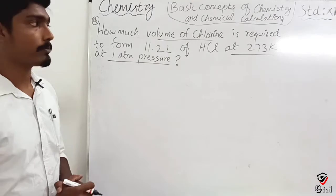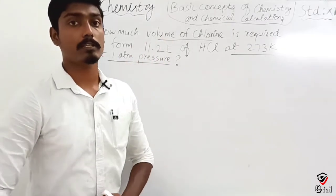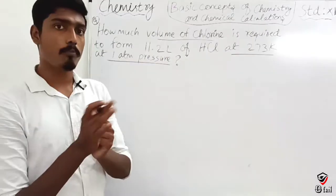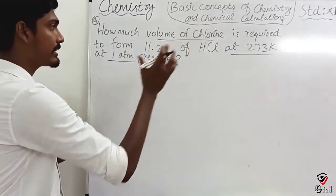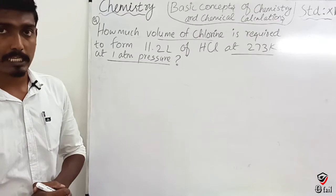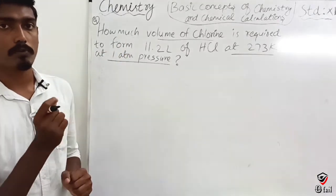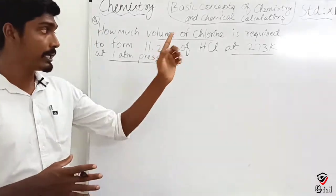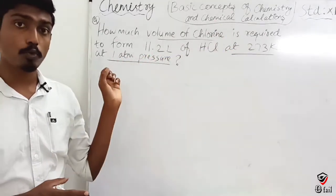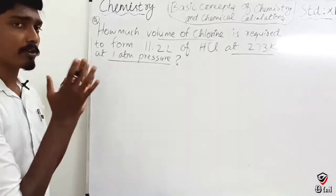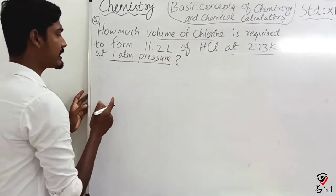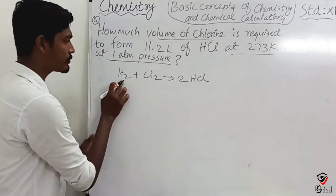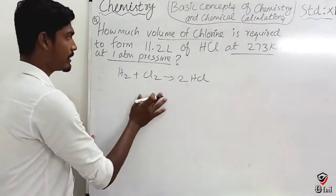Standard temperature and pressure is 273 Kelvin and 1 bar pressure. That is standard pressure and temperature. That's why we have to solve at 1 atmospheric pressure and 273 Kelvin temperature. We balance to give us the term equation. Okay, next step — we have to solve the problem.